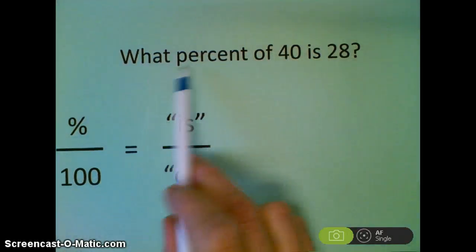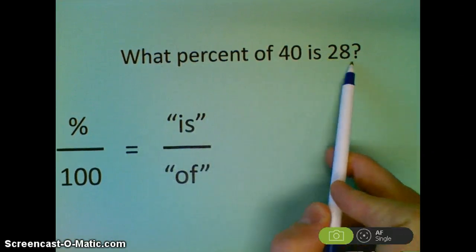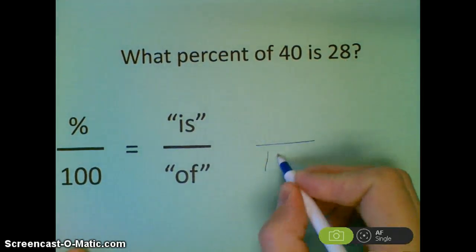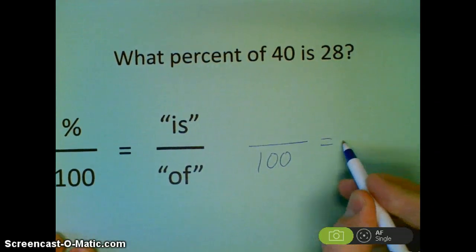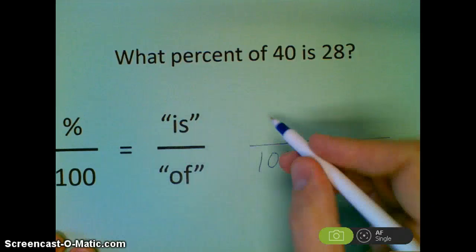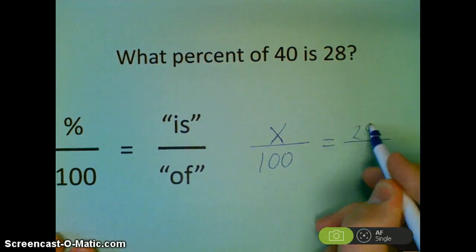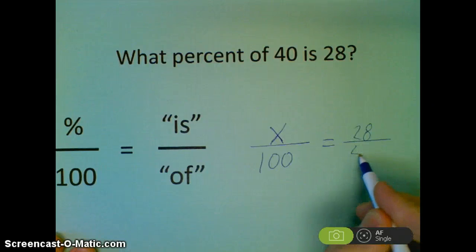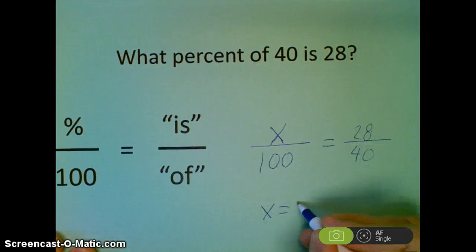Next problem. Write this down: What percent of 40 is 28? So I set it up. The 100 is always the same. It's a proportion, so that's two ratios written as fractions. They're asking me what percent, so that's going to be my variable. The number that I'm trying to find is 28 of 40. So what percent of 40 is 28?